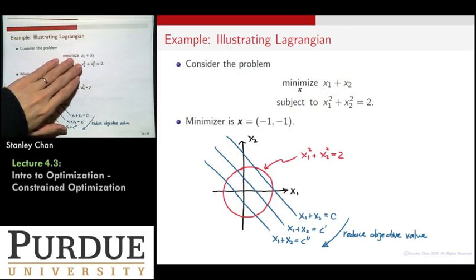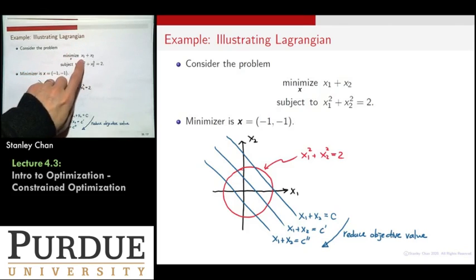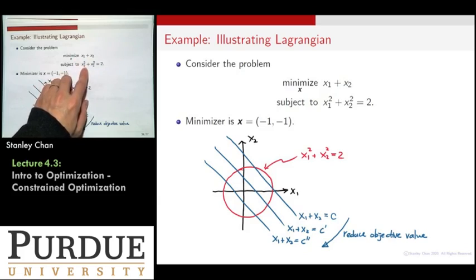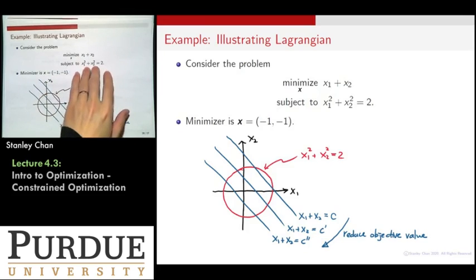So let's consider an extremely simple problem where you try to minimize this function. You have a vector x1 and x2. These are the two coordinates. This is a linear objective function. And then you have a constraint that x1 and x2, they have to live on a circle. They have to live on the surface of the circle. So this is the definition of the constraint.